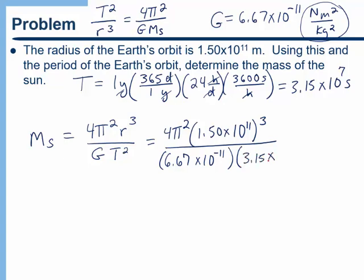Okay, 3.15×10⁷, and that's squared. When you calculate that, what you're going to find is the mass of the sun is 1.99×10³⁰ kilograms.